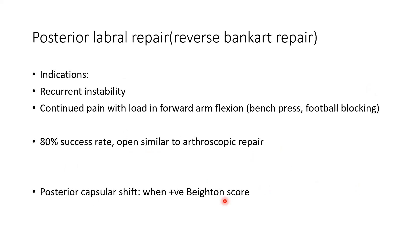The reverse Bankart repair is indicated in recurrent instability and continued pain with forward load — such as during bench press or blocking in football. It has an 80% success rate. Open and arthroscopic success rates are similar. Posterior capsular shift is performed when the Beighton score is more than 4.